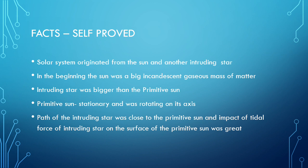This theory was a dualistic concept because two things are utilized in it — two heavenly bodies are mentioned: one is the primitive sun and the other is an intruding star, just like in the Planetesimal Theory where the primitive sun was called the protosun. It was different from Kant's theory and Laplace's Nebula Hypothesis.